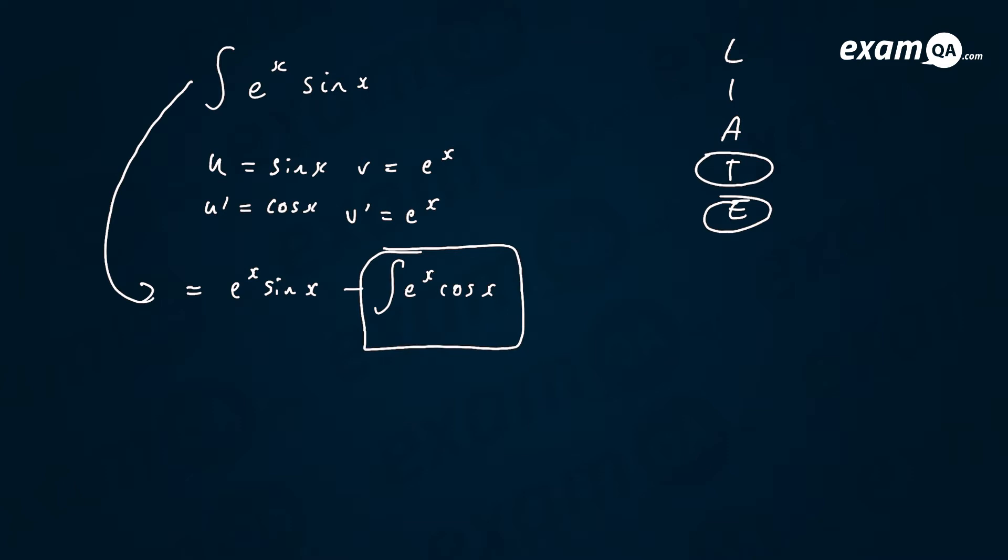If I use the same LIATE, we're going to make u equal cos x. And v dash is e to the x. So that means v is e to the x. And u dash is minus sin x.